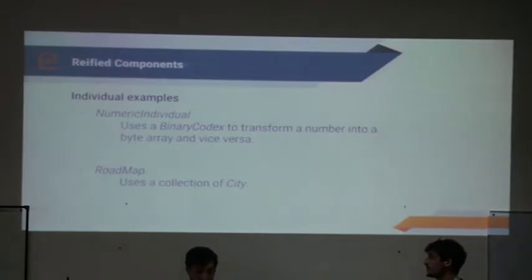In the examples, we create a numeric individual, which genotypes are binary. In the second example, we create a roadmap, which contains a list of cities, and each city contains a number and geolocalization.